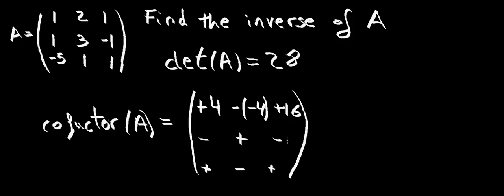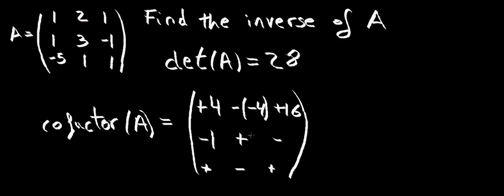Now we move on to the second row. My sign convention now is minus plus minus. The minor for this element 1 here is going to be anything not on this column, not on this row, so that leaves us with these values here and these values here. 2 times 1 minus minus 1 times 1 is going to be 1 in this position. Now we move on to the element in the center, this 3 here. The minor for this element is any element not on this row, not on this column, which leaves us with the corners. 1 times 1 is 1, minus 1 times 5 is plus 5, that gives us 6.